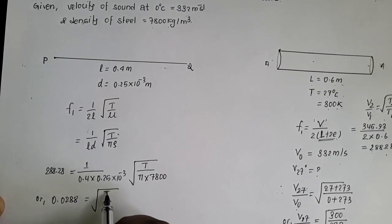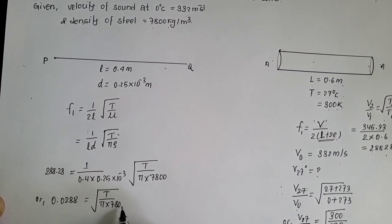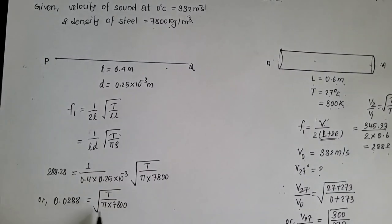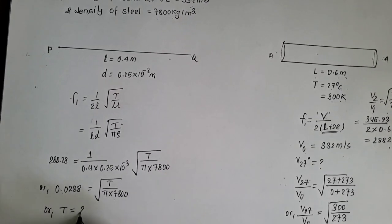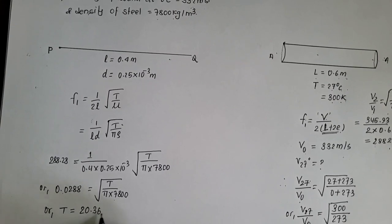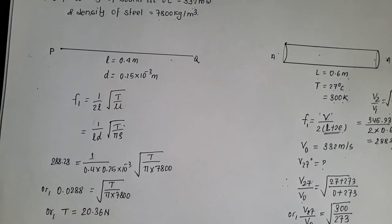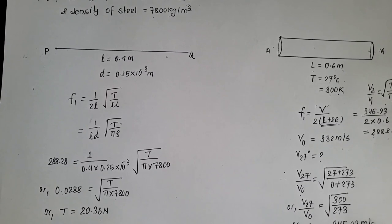Yo value lai solve first ma 0.0288 which is equal to square root of T by pi into 7800. Both side mai square garane ra yo denominator ko value le LHS ma le ra multiple garwane T ko value cha obtain garson 20.36 newton. It means aile given is string ma apply gareko tension ko value cha aiyo 20.36 newton.